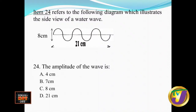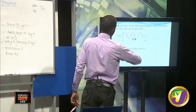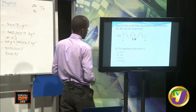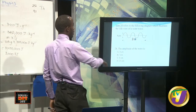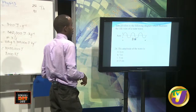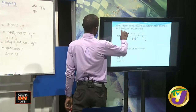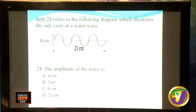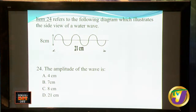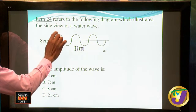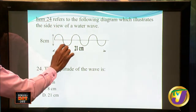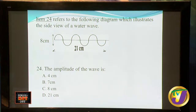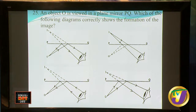Item 24 refers to a diagram showing a side view of a water wave. The diagram shows displacement and distance from one point to the next. The amplitude of the wave is determined from the rest position to the maximum point that the wave displaces a particle. They have given an 8 centimeter gap from peak to peak, or crest to trough. But the amplitude is not the 8 centimeters — it is from the rest position to either the crest or the trough. Since 8 is the full peak to peak, half of that is the amplitude, which is 4 centimeters.